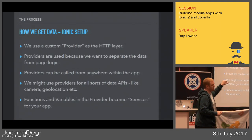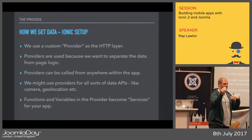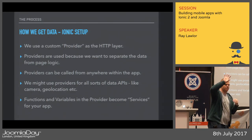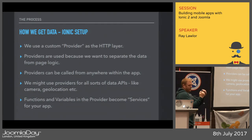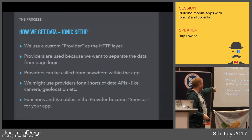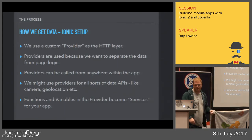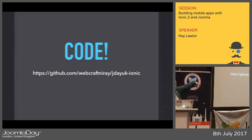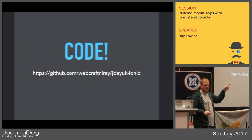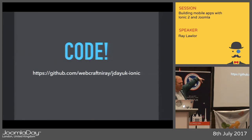We use a provider for the HTTP layer — just like in Joomla we want to separate content from presentation. With Ionic we move the API layer to a separate provider so any page or aspect of the app can access that data. All the logic is really just an HTTP call that gets data back and sends it to the view. We can write providers for lots of different things — the Joomla API, but also camera and geolocation. Functions and variables within a provider become services for your app.